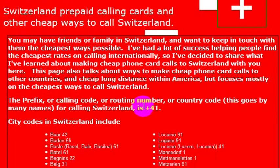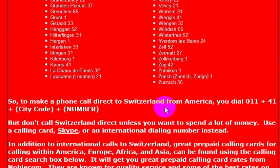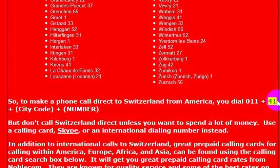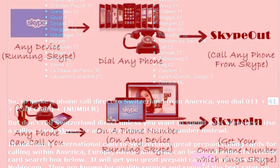If you have friends or family there and you're trying to make a phone call, you need to know the country code for Switzerland, which is 41. If you're calling directly from a landline, you would dial 011, which is the international dialing code, then 41, the country code for Switzerland, and then the phone number you're trying to reach.